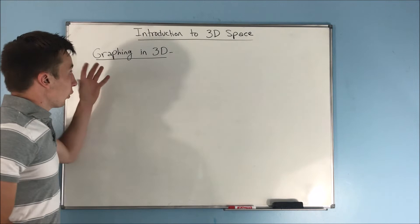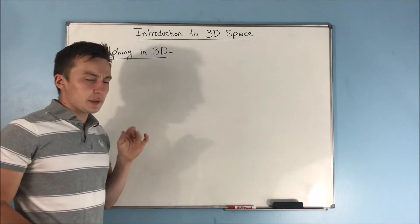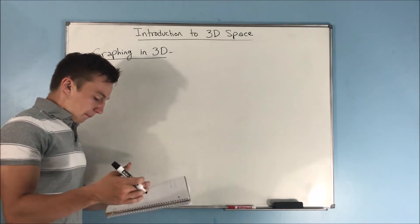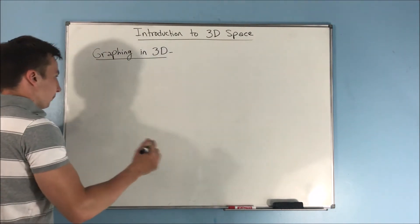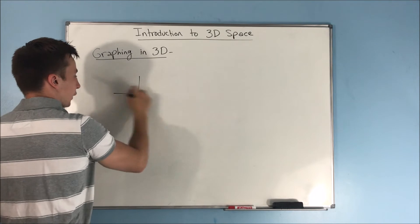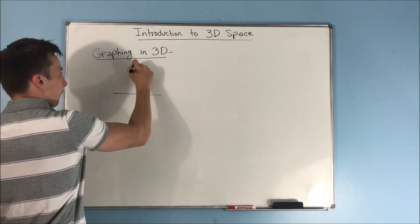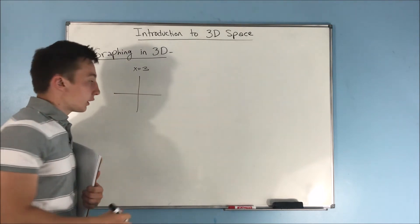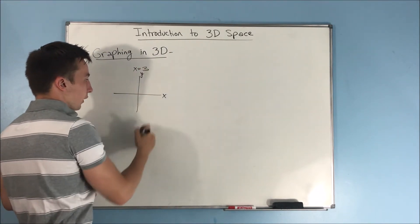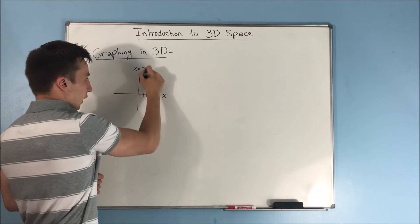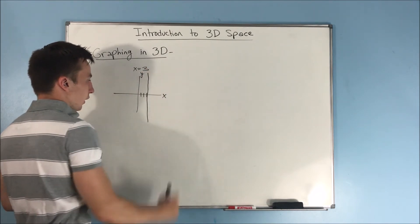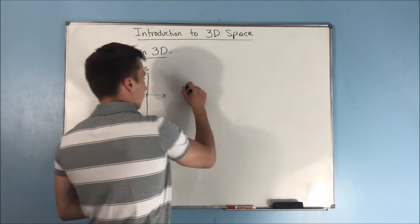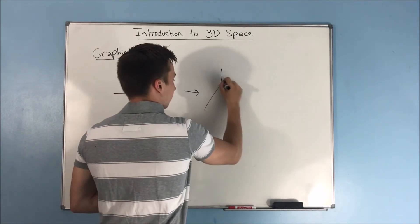So now we're going to talk about graphing in three dimensions. So we're going to do some basic stuff, right? We're not going to get into anything too complex yet. But here's some things that you can kind of see changing. Let's say that we have the graph X equals 3. And we're trying to graph this in two dimensions. Well, here's our X axis. Here's our Y axis. We go over 3 and this becomes X equals 3. Right?